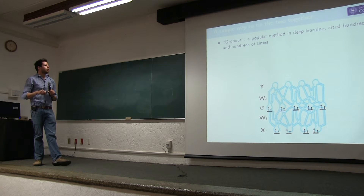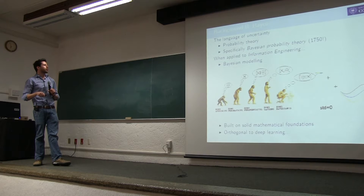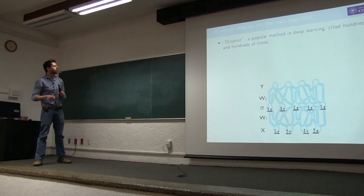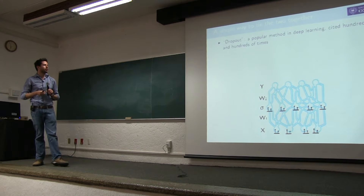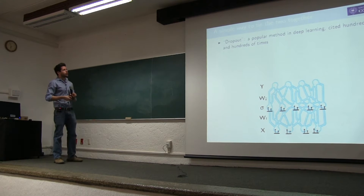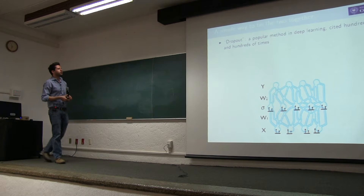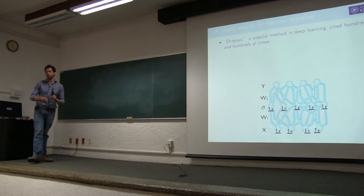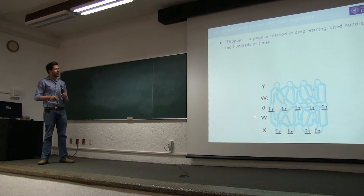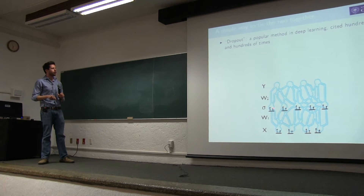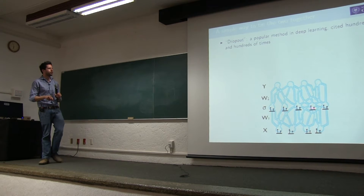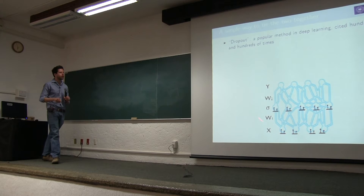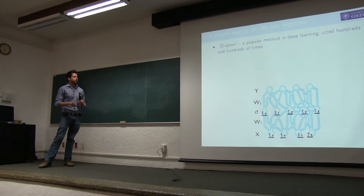Dropout is a tool connecting probability theory with deep learning models. We multiply each input unit by a draw from a Bernoulli distribution with probability p, for example 0.5. Then we multiply by w to get a hidden vector, multiply each unit again by a Bernoulli draw, do another affine transformation, and get the output — this is a stochastic forward pass.